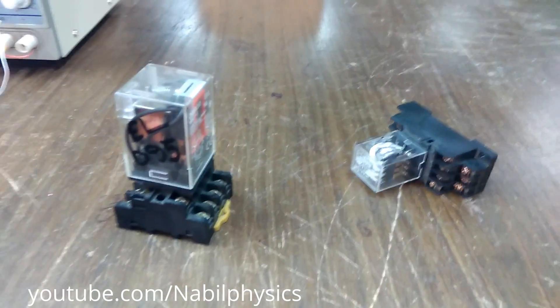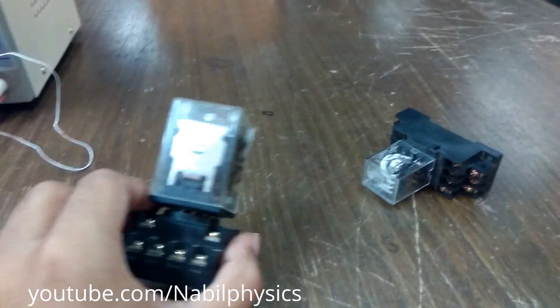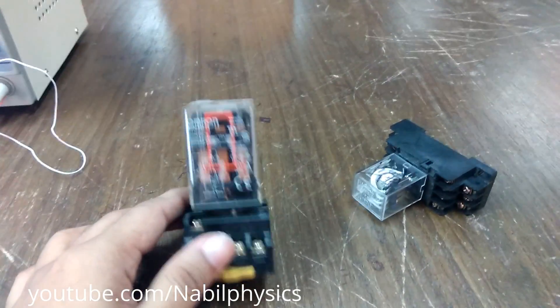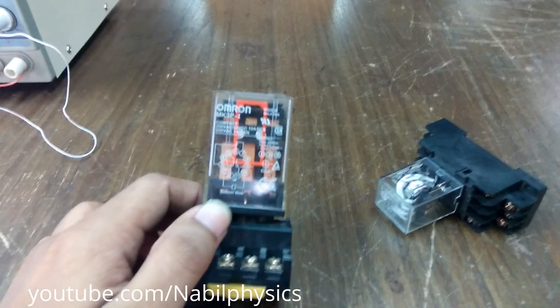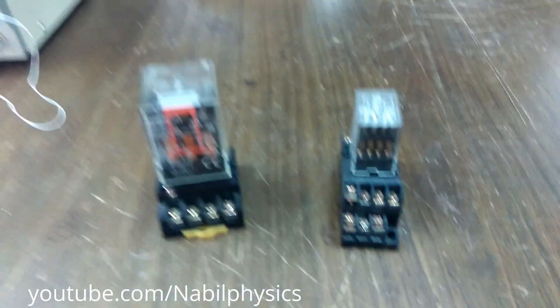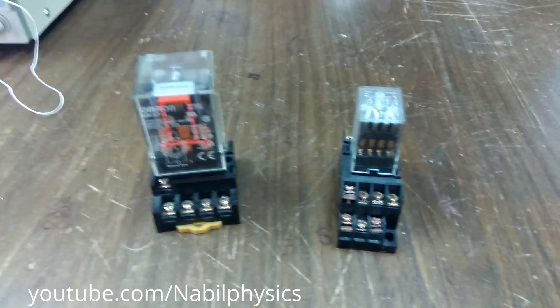This is the very basic relay. We have another two relays which are basically industrial relays. This is a very powerful relay. We need 24 volt to operate this. This is Omron, a very good brand from Malaysia, and this is another industrial relay.